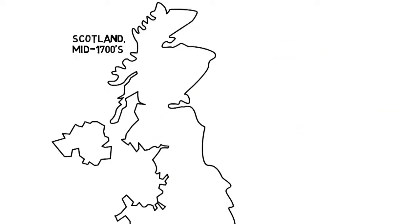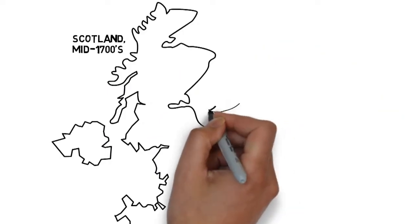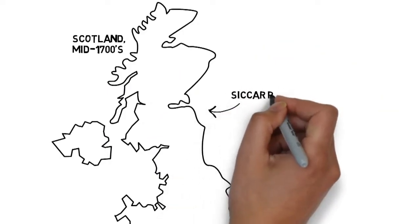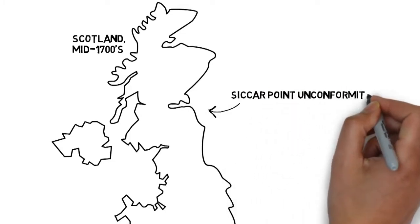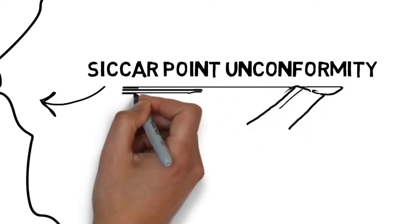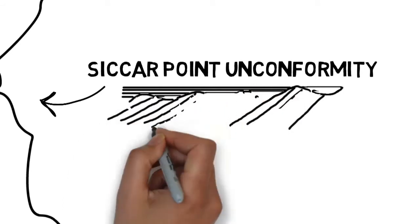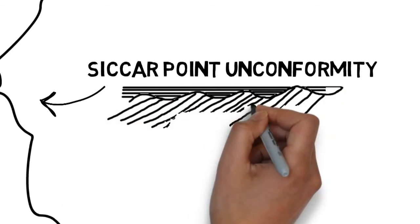What is an unconformity? I keep using that word — I'll tell you how he found it. He went out in his rowboat near Edinburgh, to a place called Siccar Point, and any geologist will know it. It's a place where he found strata — layers of sedimentary rock going in one direction.